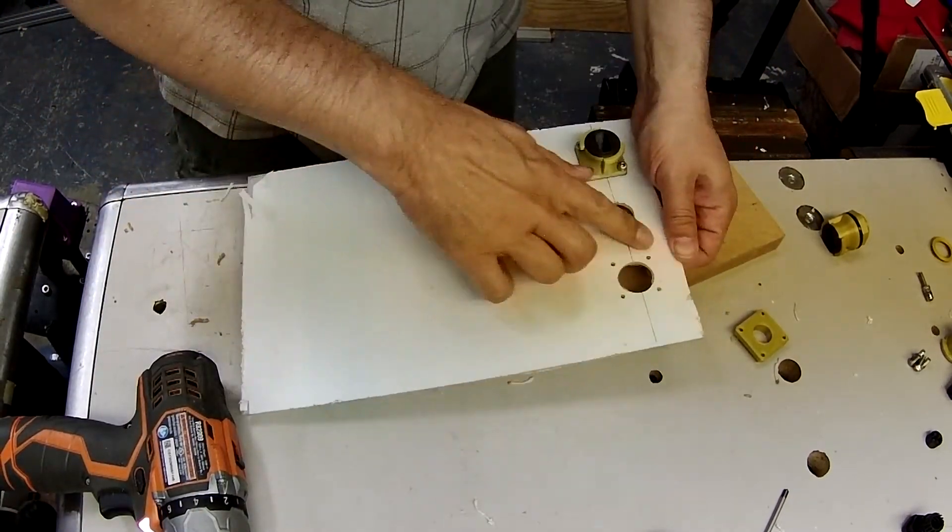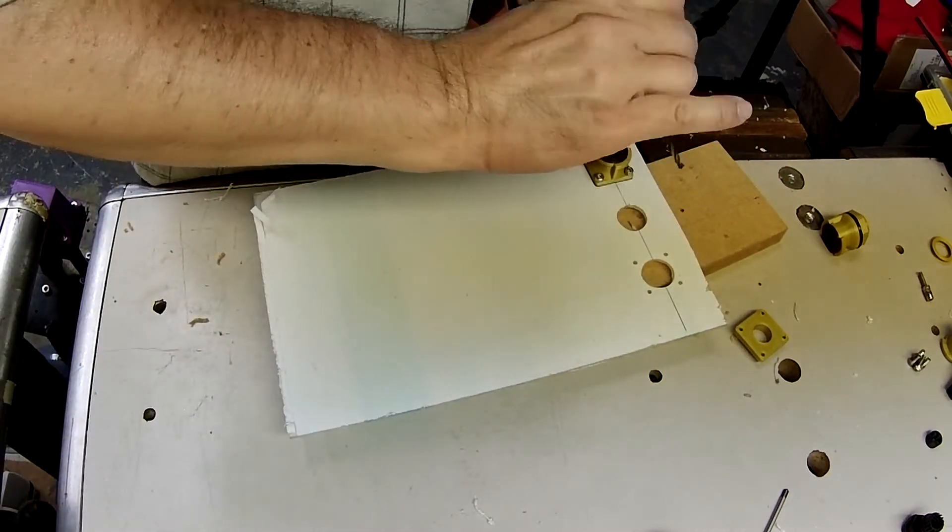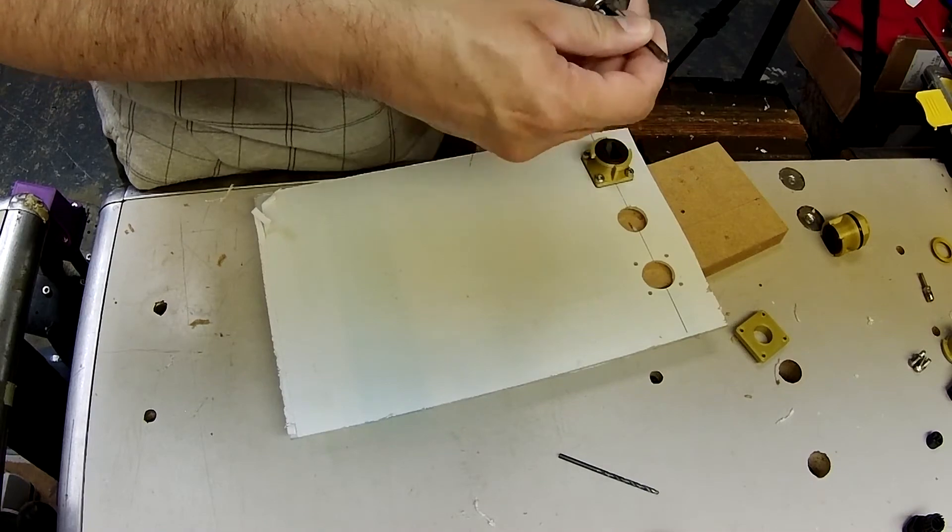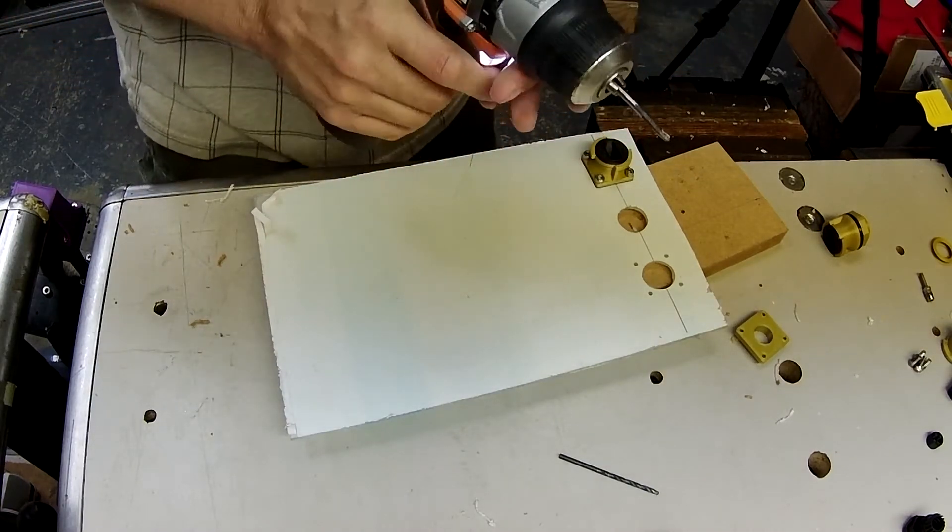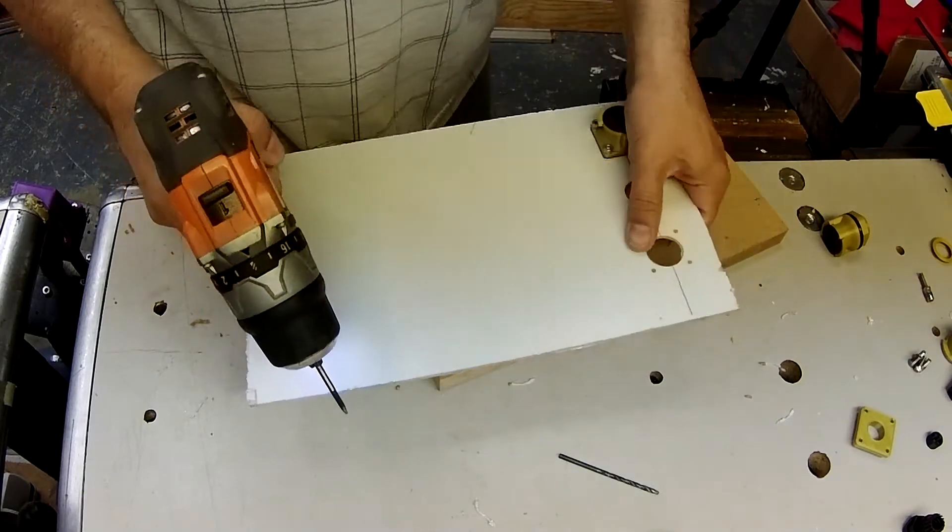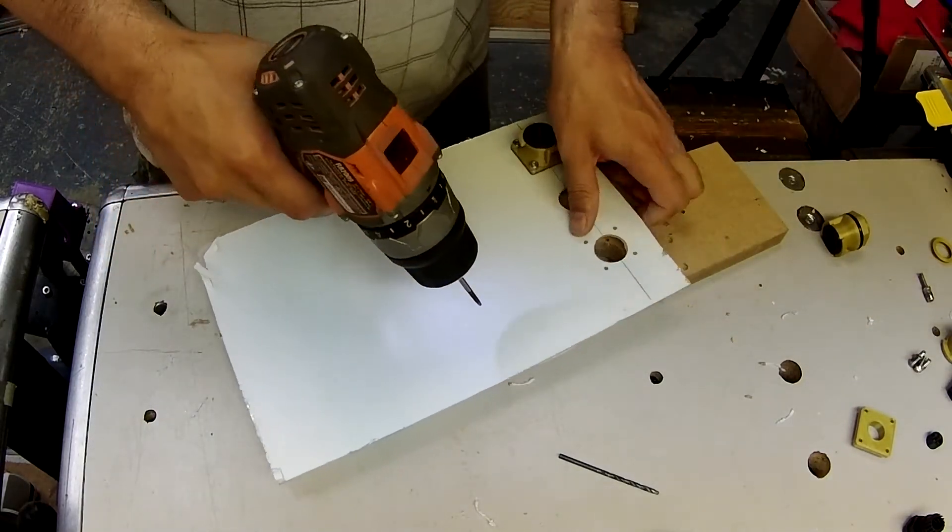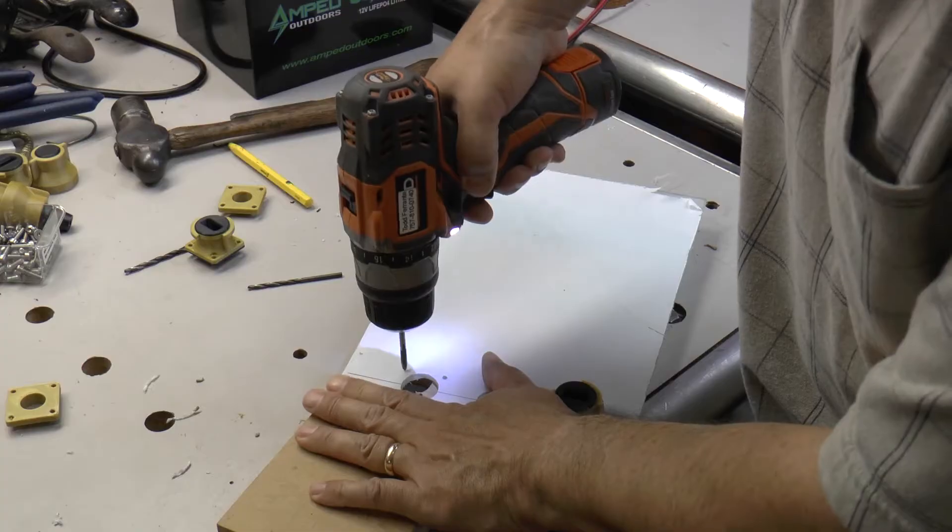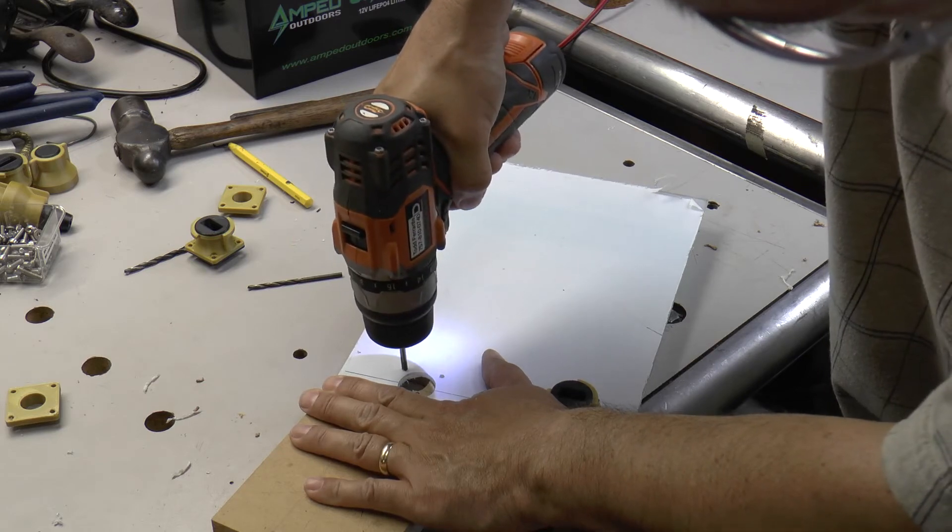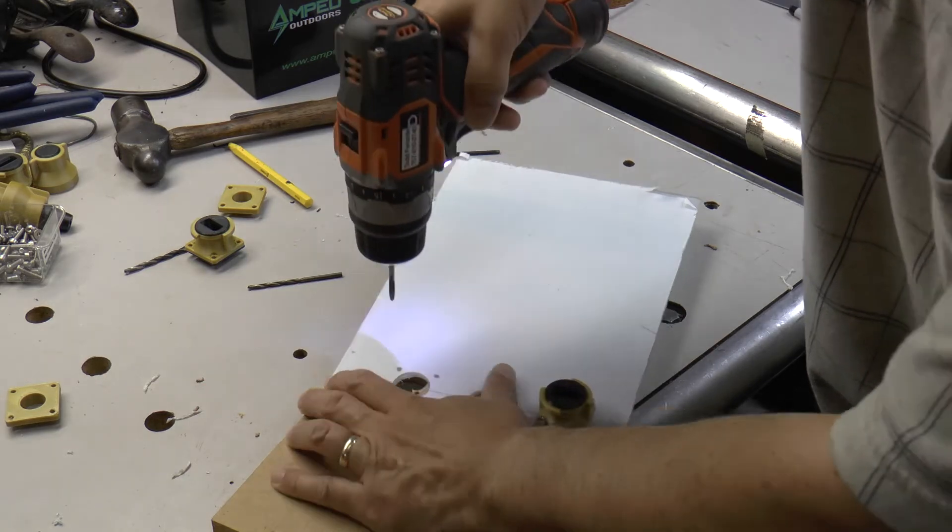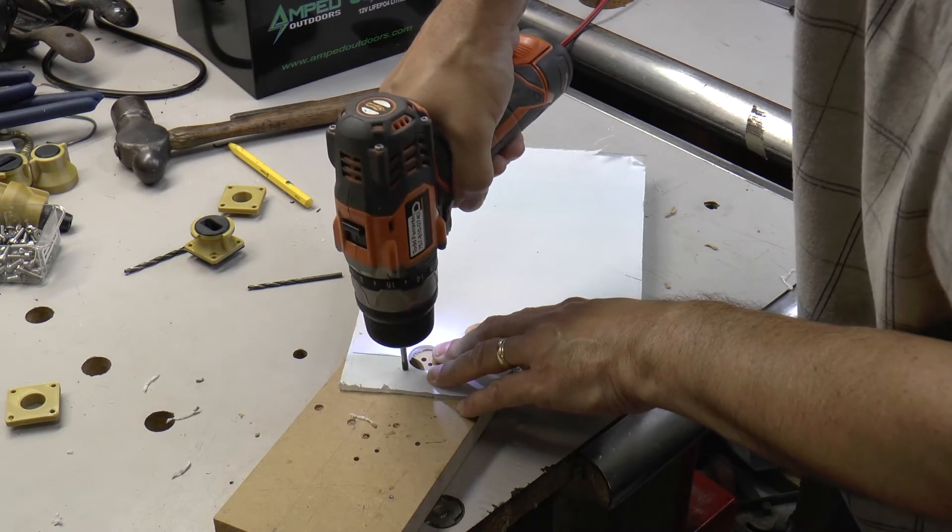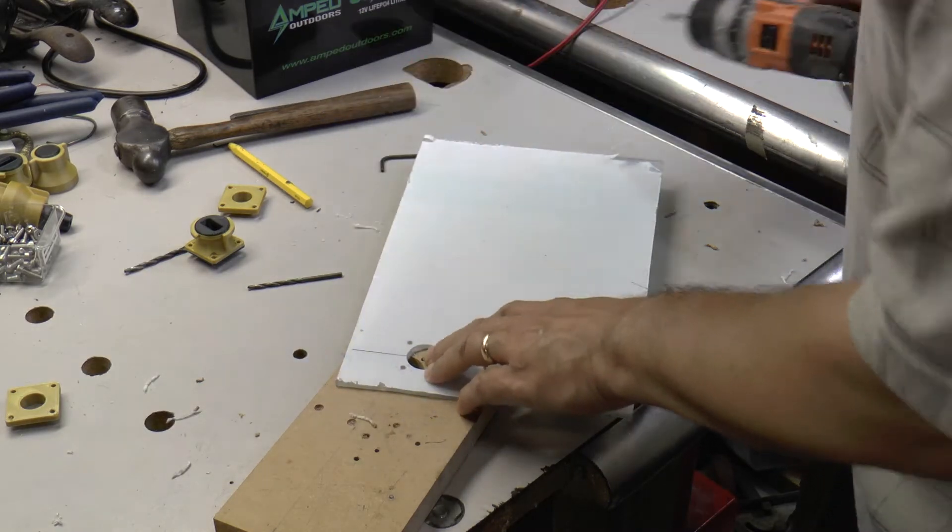So these are our tap holes, and now we can tap them using an M4 tap. You can either do this by hand, or you can use a drill run at slow speed. You just have to be real careful to put these in very straight.